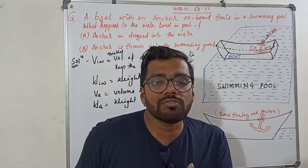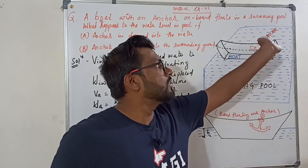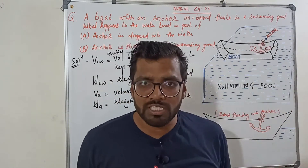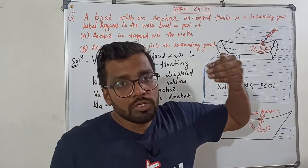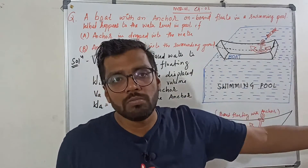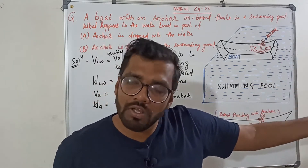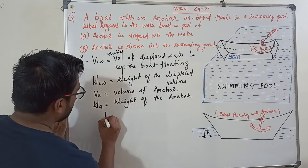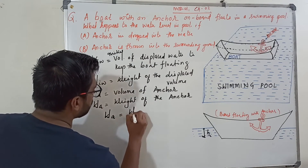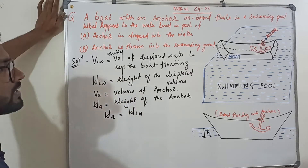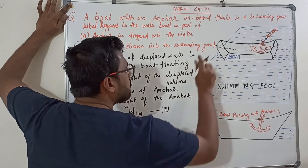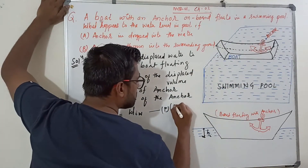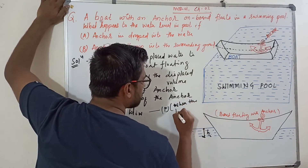So the weight of the anchor must equal the weight of the displaced water. However, the volume of displaced water will be much greater than the volume of the anchor itself. This is the initial condition when the anchor is inside the boat and the boat is floating.